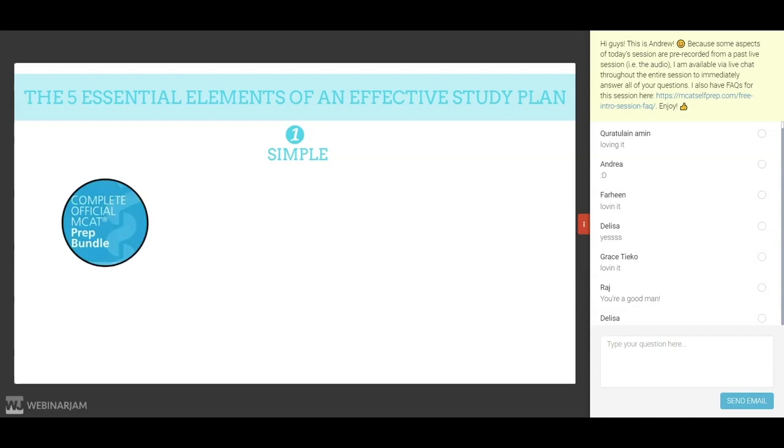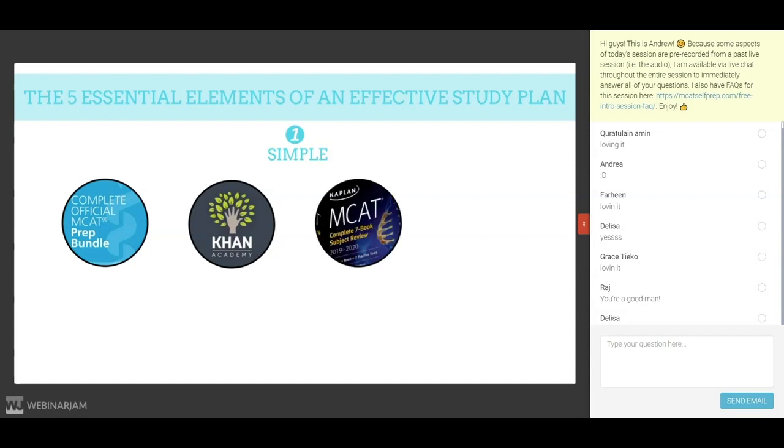The AAMC's practice question bundle and the Khan Academy video collection produced in partnership with the AAMC should form the foundation of your MCAT studying. Content review books such as the Kaplan or Princeton seven book series and other free YouTube videos can also support this foundation as needed. But remember to keep your focus on the very best resources, those produced by the AAMC.